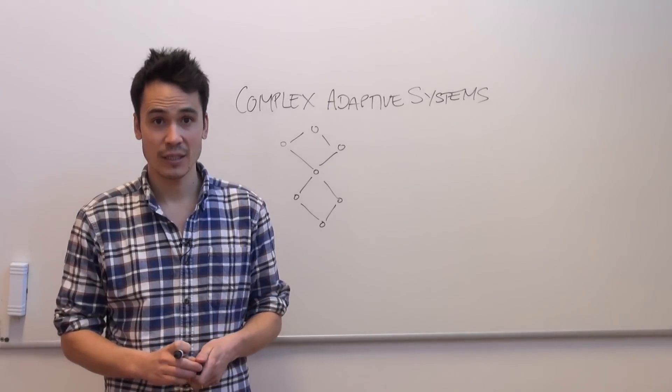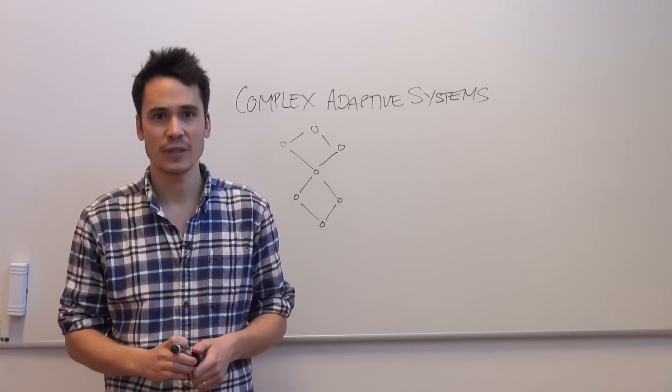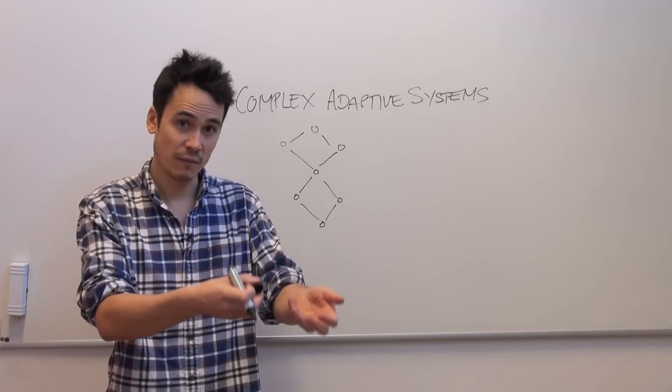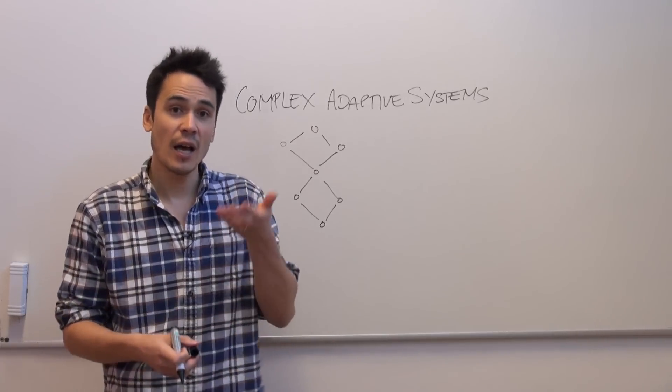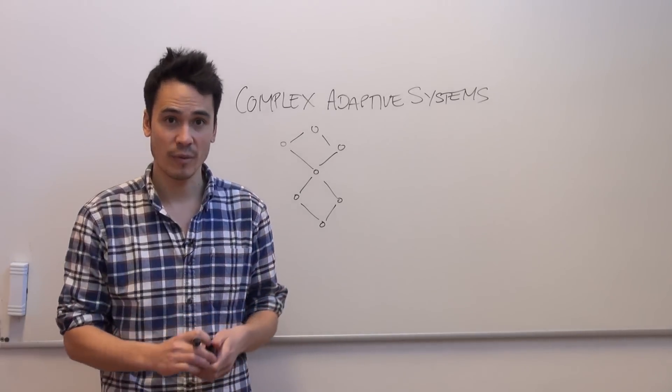The third characteristic is that they are systems. This means they are very broad, operating over a range of scales. So in an ecosystem, individual predators eat individual prey. But at a higher level, populations of predators are interacting with the population of prey.